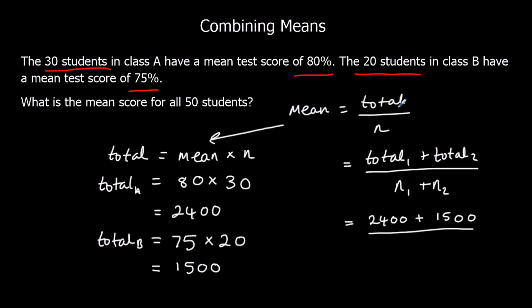Well there are 50. 30 plus 20, which is 50. So we want 2400 plus 1500 divided by 50, and we get 78%. And that is our answer.